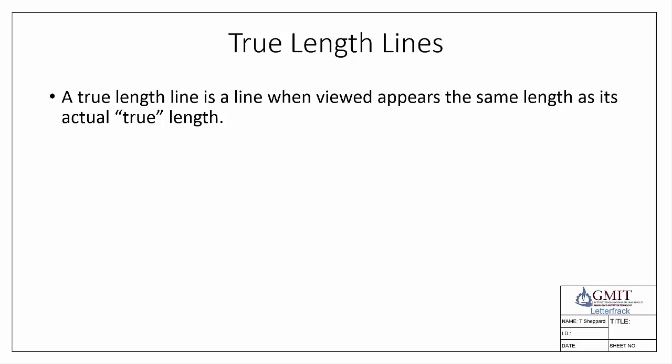A true length line is a line that, when viewed, appears the same length as its actual true length. If you take a metal bar and measure it with a measuring tape, and the length you see when looking at the bar is the same as that measured distance, then you are looking at the true length — you have a view that gives you the true length of your line.